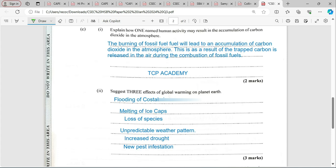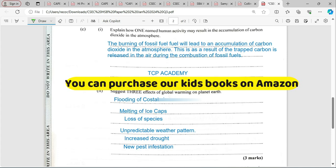Here we are asked to suggest three effects of global warming on Earth. The effects are many and I just chose to list a couple on the paper, but in your exam, just do three. Don't try to write four. You're going to have flooding of coastal plains, melting of ice caps.